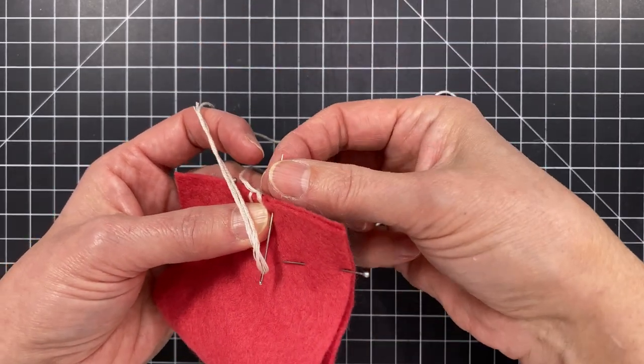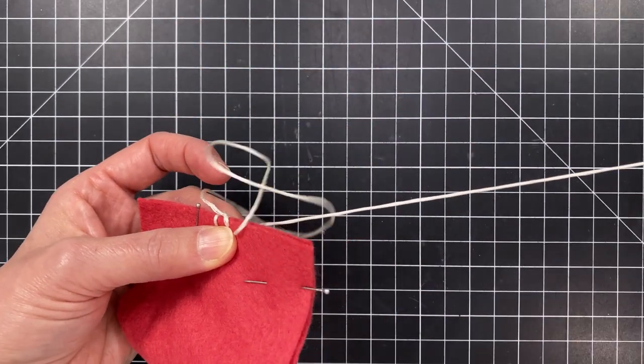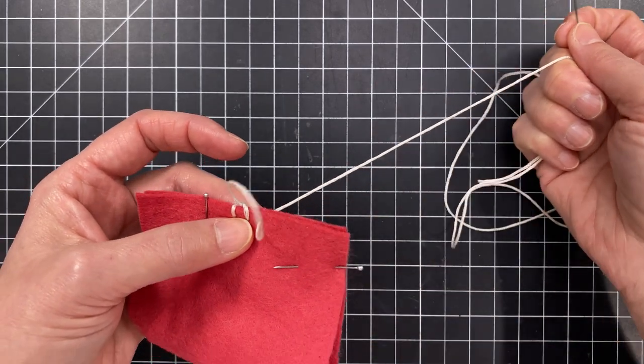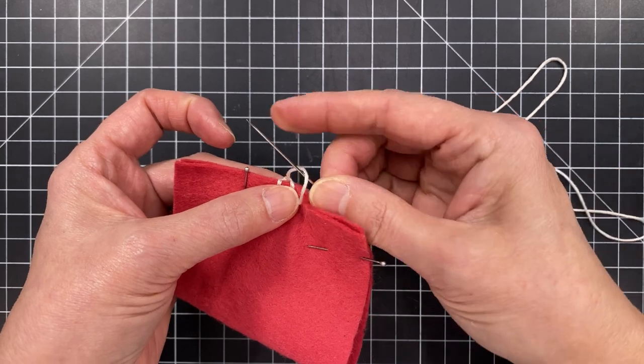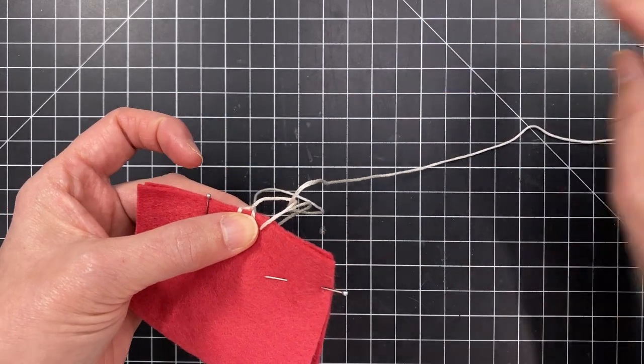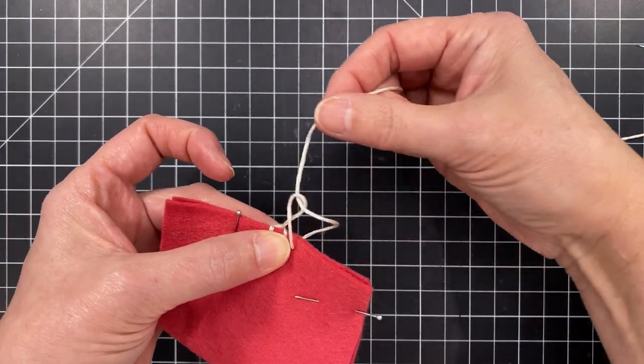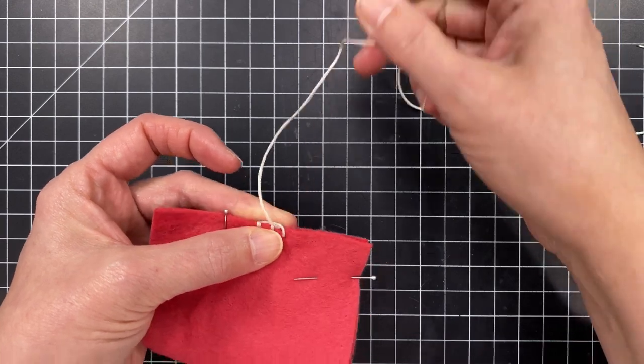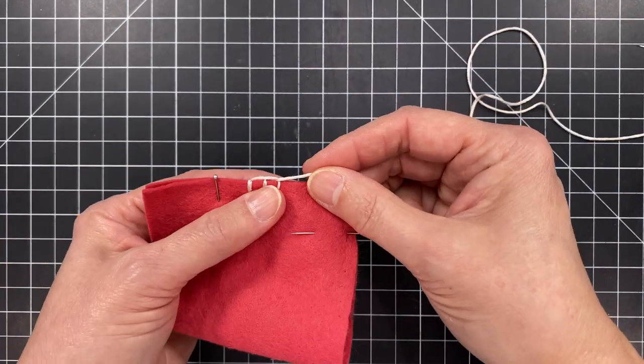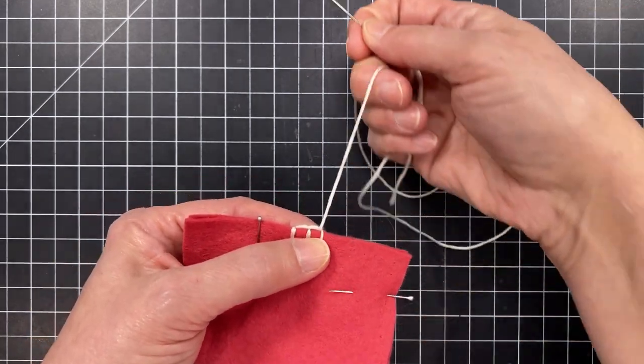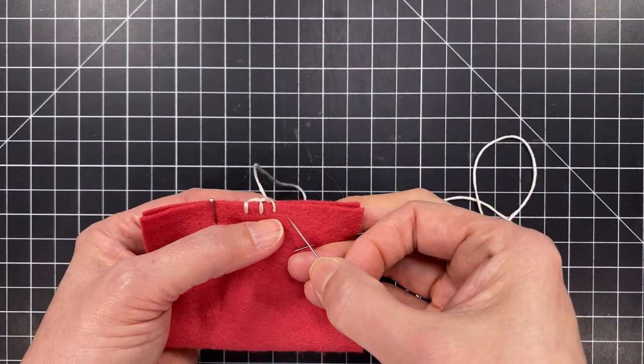And I will just keep repeating this same process. This is going to give a really nice finished edge to the two layers of felt. Now of course, if you have a sewing machine, you can sew these together. You can just glue them together if you want. But I really love the look of the blanket stitch along the edges of my felt projects. Seriously, love it. And it's very therapeutic to do this.